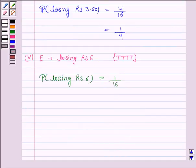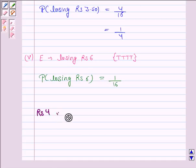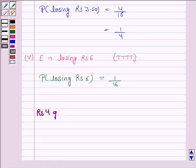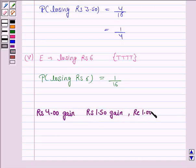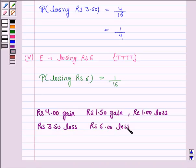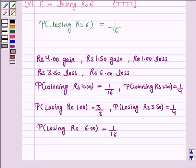So there are 5 different amounts of money which a person can win or lose: he can win rupee 4, win rupee 1.50, lose rupee 1, lose 3 rupees 50 paisa, or lose rupee 6. We have obtained the probabilities of winning or losing these amounts. This completes the question. Bye for now, take care, and have a good day.